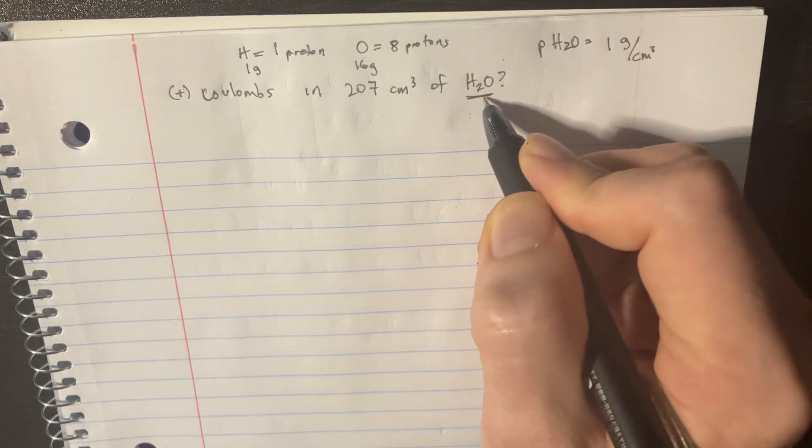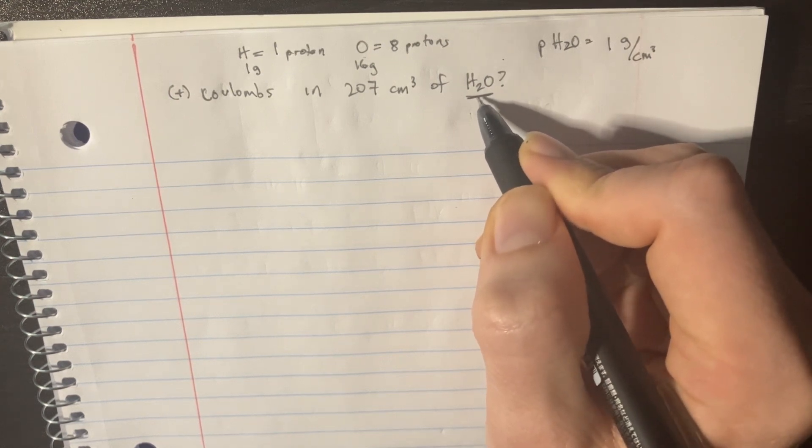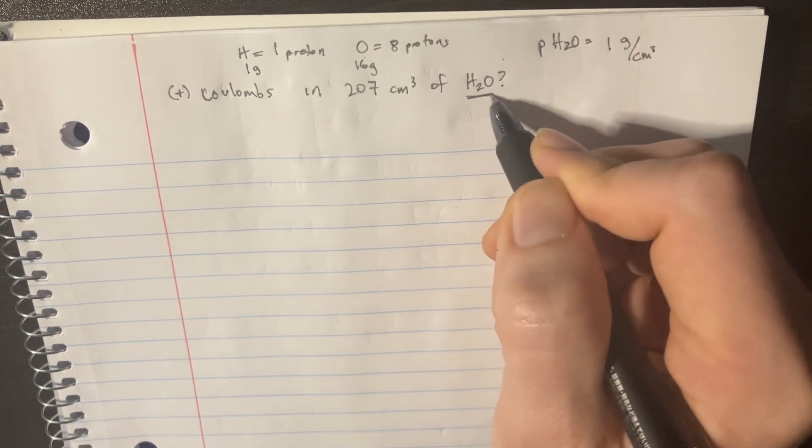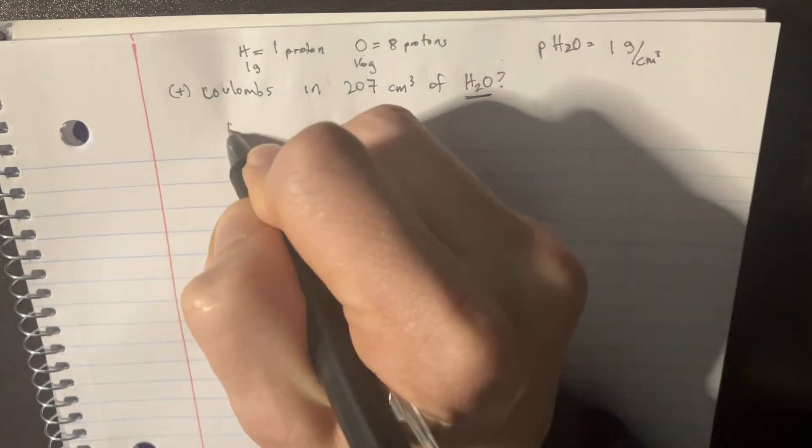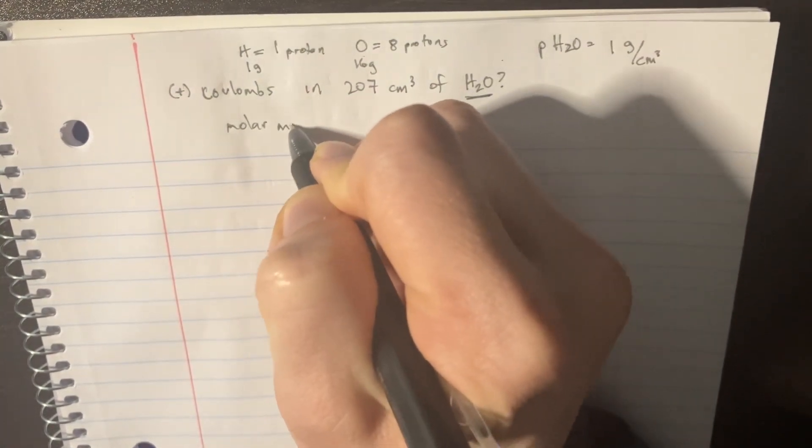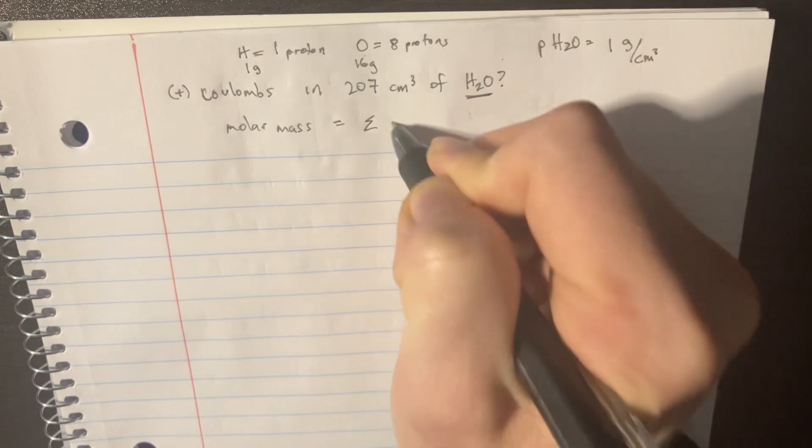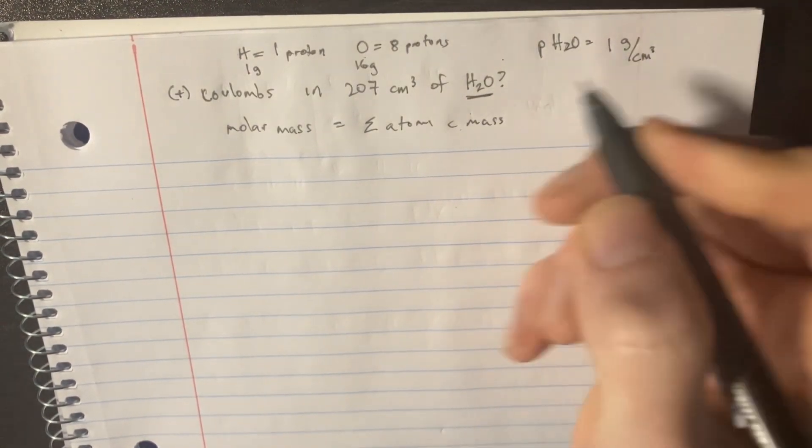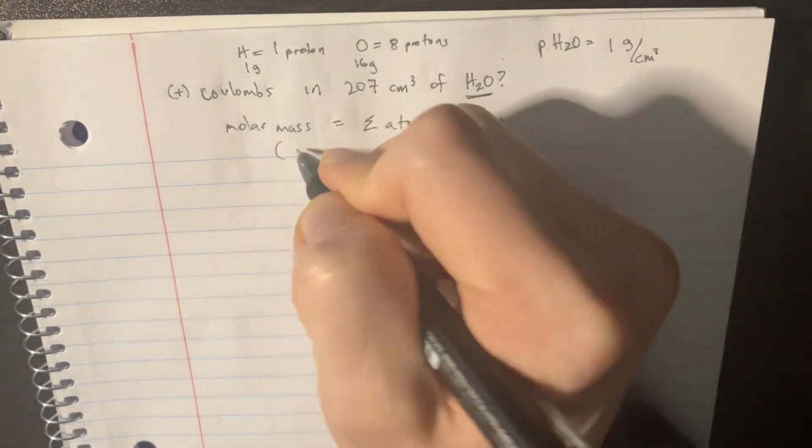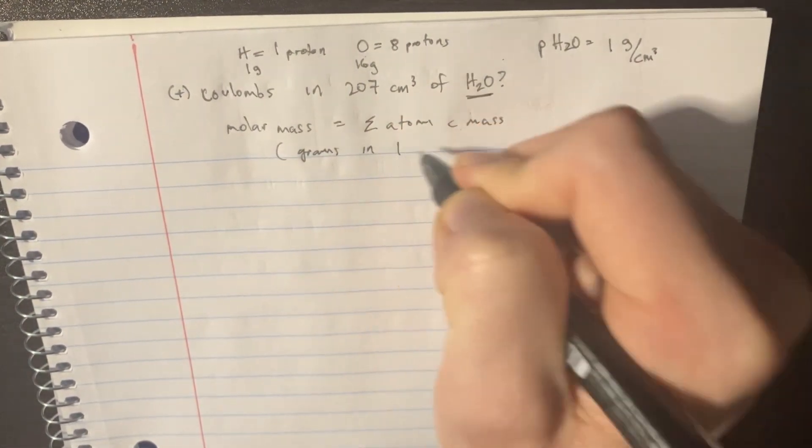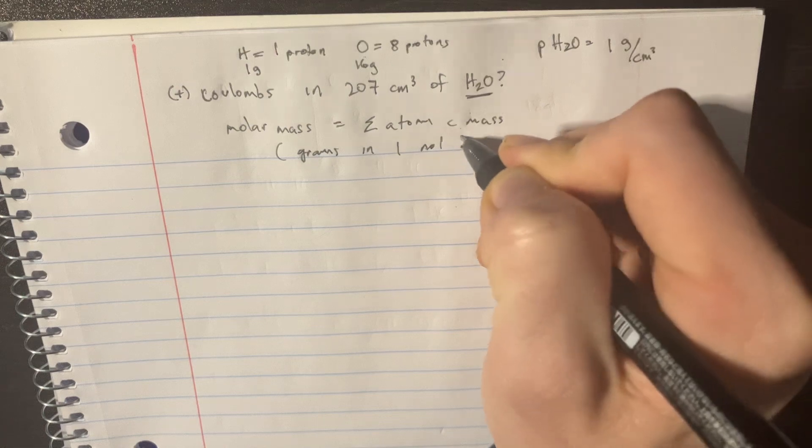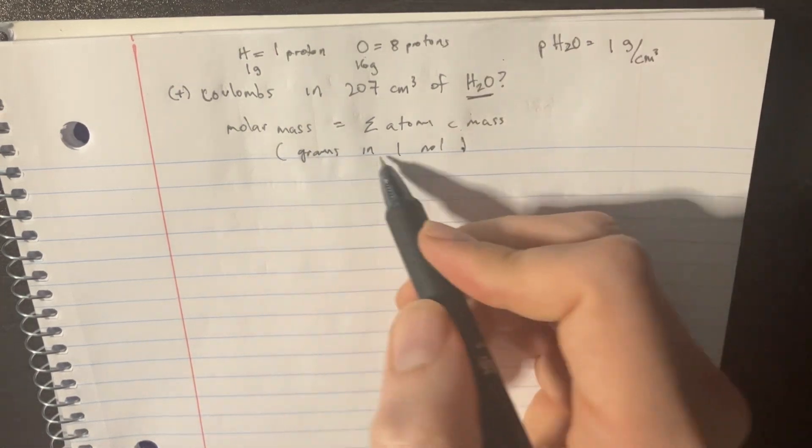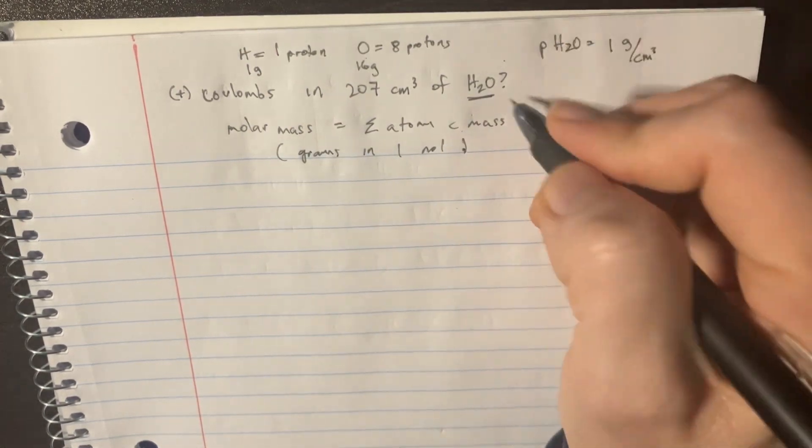And we need to realize that we've got to figure out what the molar mass of H2O is. That means the molar mass is equal to the sum of the atomic masses. This is found on the periodic table. But this is actually how many grams are in one mole of H2O. And so once we can figure out that, we can do this.